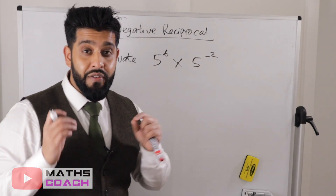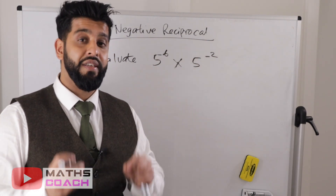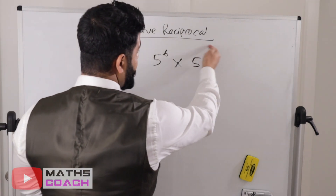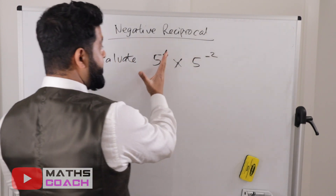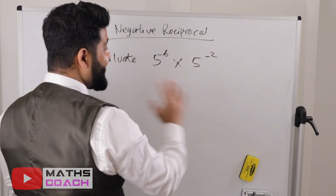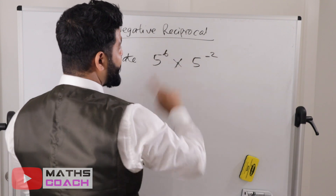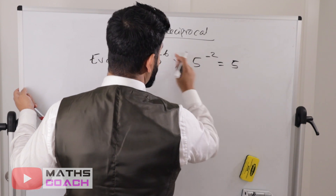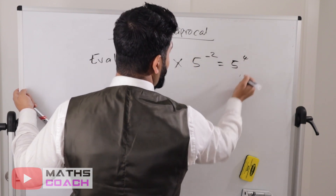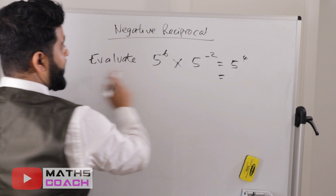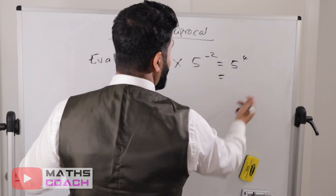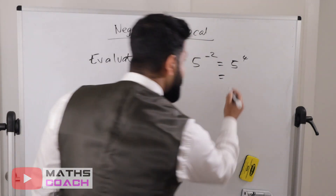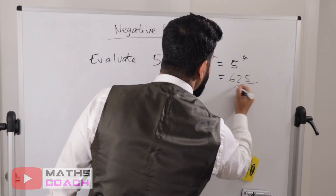This example says evaluate 5 to the power of 6 times 5 to the power of minus 2. Evaluate means find a final numerical answer, not leave in index form. Since the bases are the same, add the two powers: 6 plus minus 2 equals 4. Then 5 to the power of 4 means 5 times 5 times 5 times 5, which gives 625.